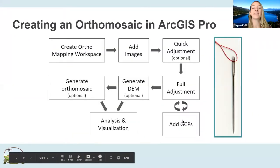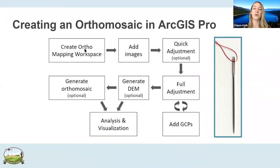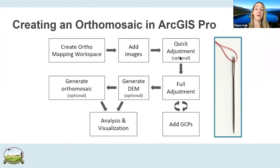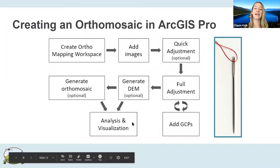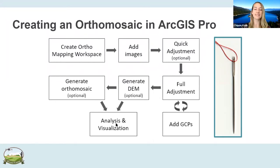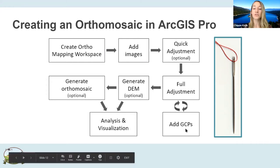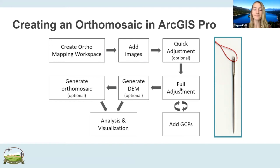Within ArcGIS Pro, you open up the mapping workspace, add all your images, run the full block adjustment using the adjust tool — which takes about 45 to 50 minutes with this project — then look at the digital elevation model and orthomosaic, and do analysis and visualization. Ground control points are not mandatory but can be added after you run adjust to make your orthomosaic more accurate.